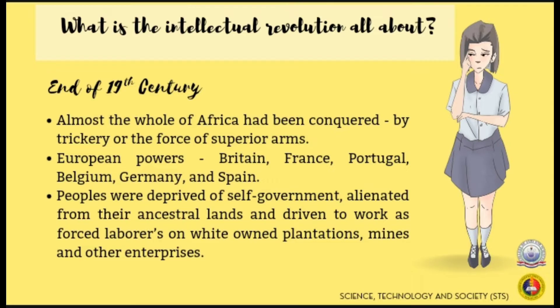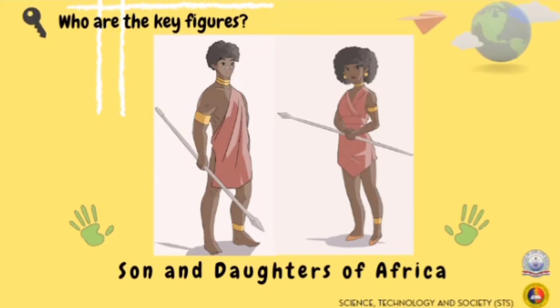Britain, France, Portugal, Belgium, Germany, and Spain placed Africa beneath the alien yoke of a handful of European powers. Her people were deprived of self-government, or self-control, alienated from their ancestral lands and driven to work as forced laborers on white-owned plantations, mines, and other enterprises. The sons and daughters of Africa are the key figures.